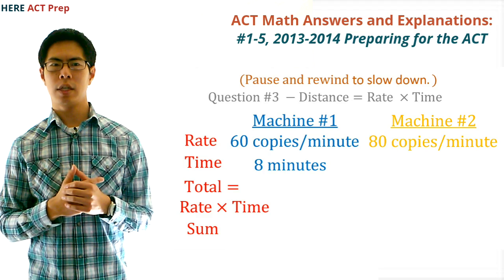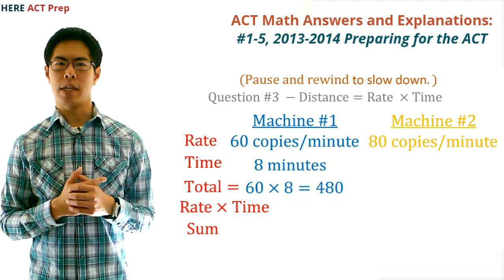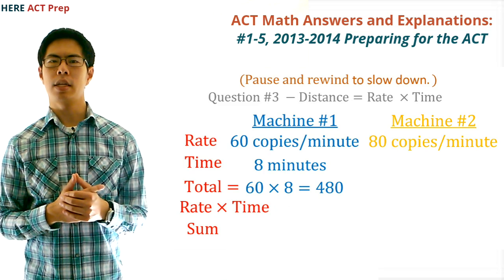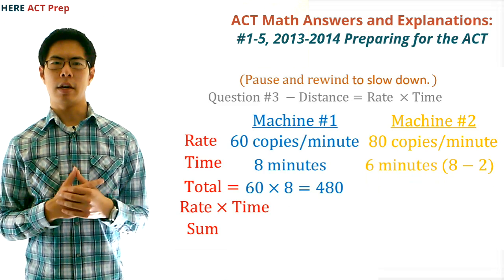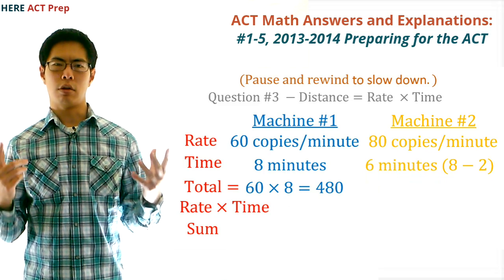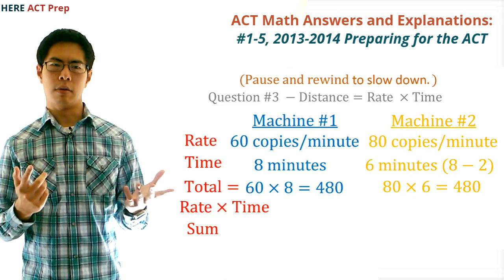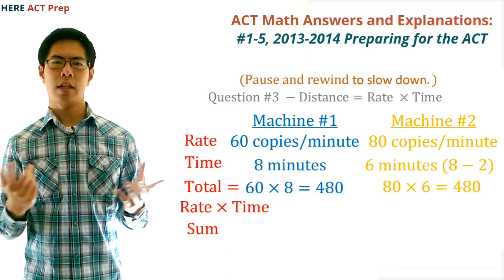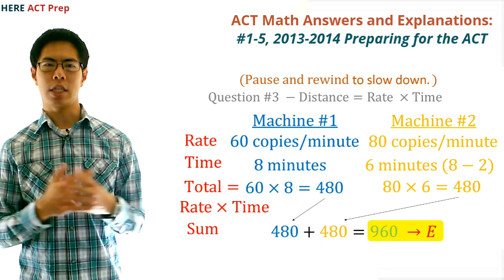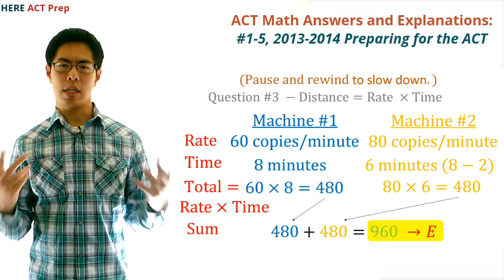The total copies for the first machine will be 60 times 8, or 480. We're also told that the second machine starts two minutes after the first machine, which means it runs for six minutes (8 minus 2). So the total copies for the second machine will be 80 times 6, or 480 as well. Finally, we add the totals together to get 960 copies for both machines. The answer is E.